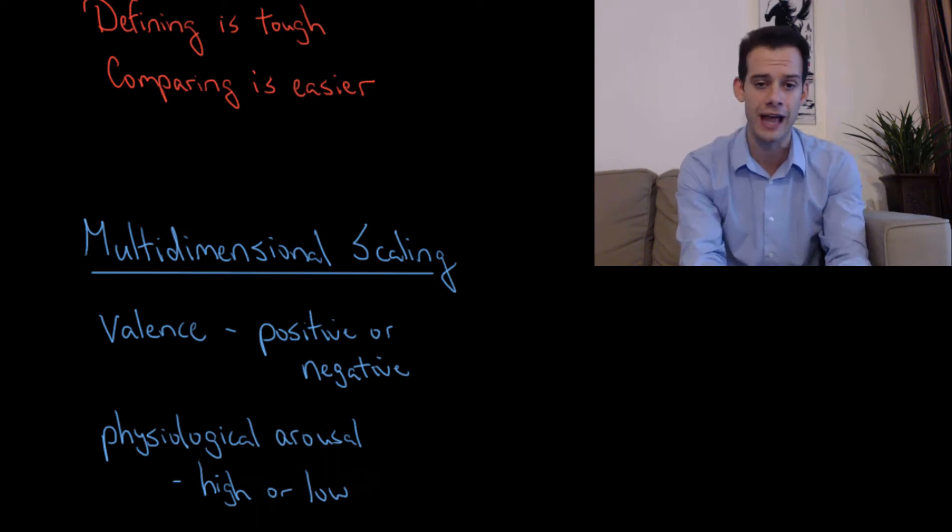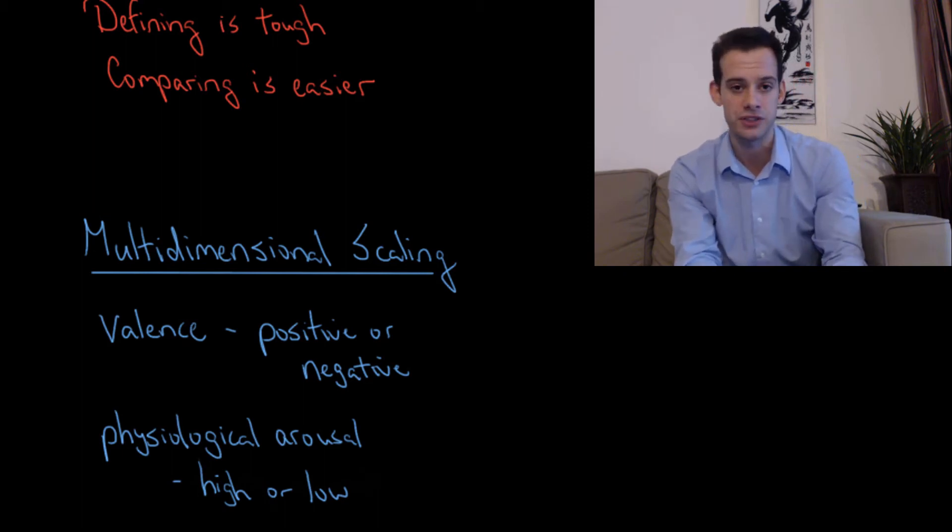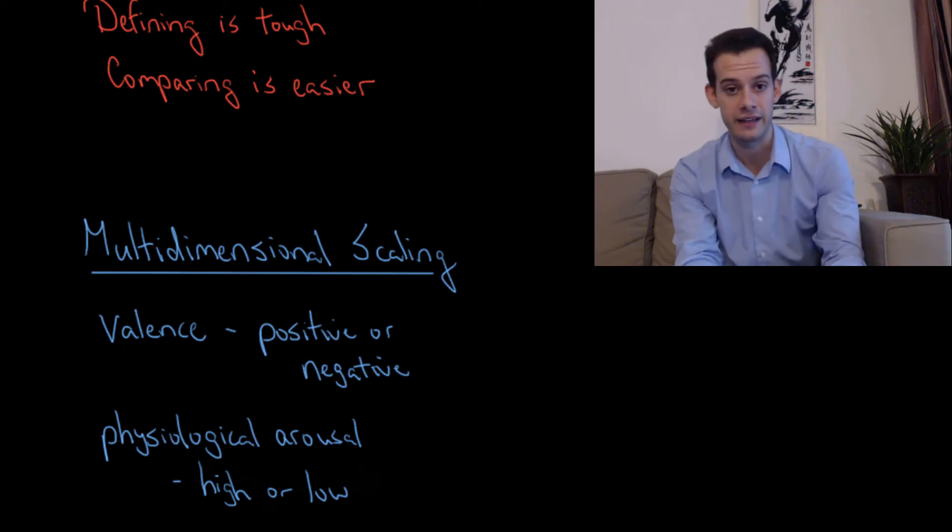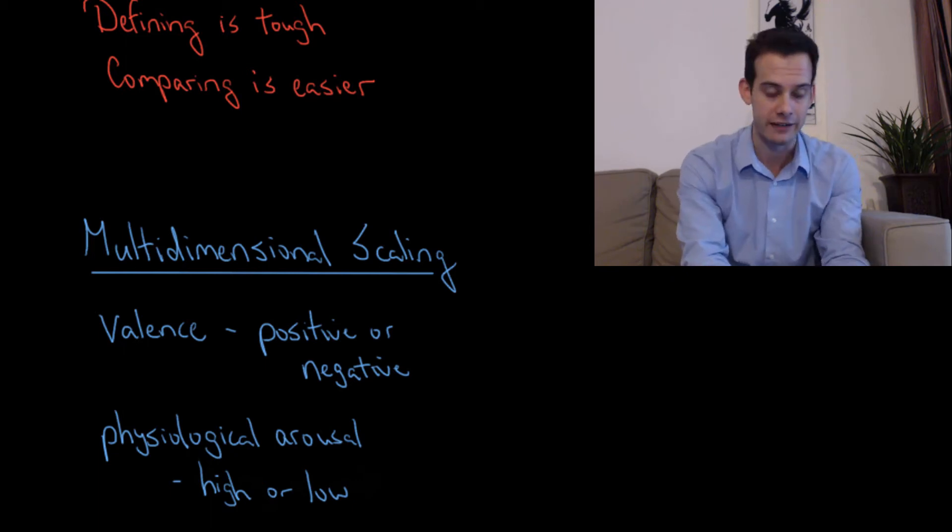So the two dimensions that we're going to look at for emotions are valence and physiological arousal. So what valence refers to is whether or not the emotion is a positive or negative experience, and how strongly positive or how strongly negative it is. So you might not be able to carefully define happiness and sadness, but you can probably say that well happiness is more of a positive emotion than sadness is. So we'd say it's more positive valence and the sadness is more negative valence.